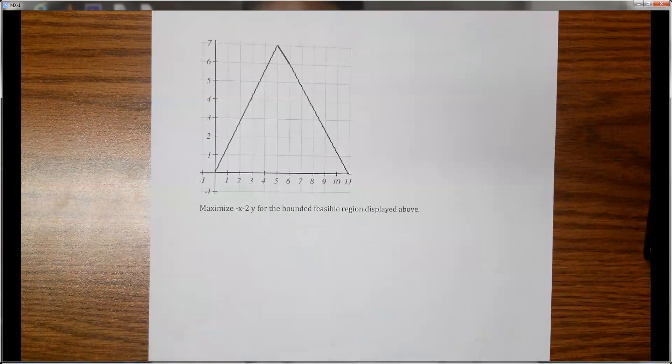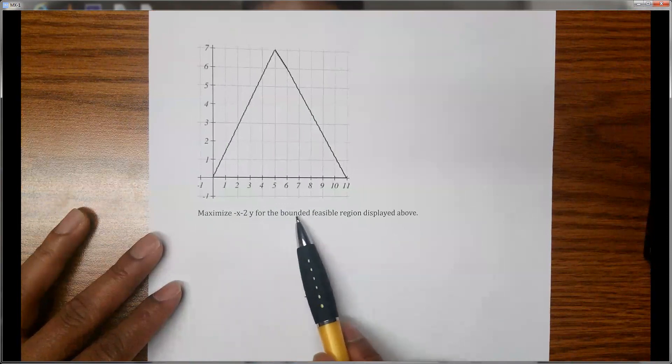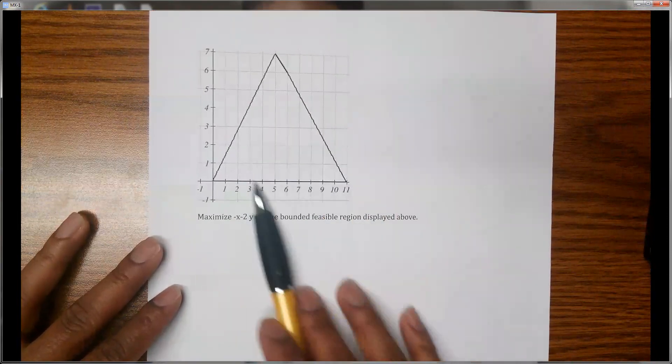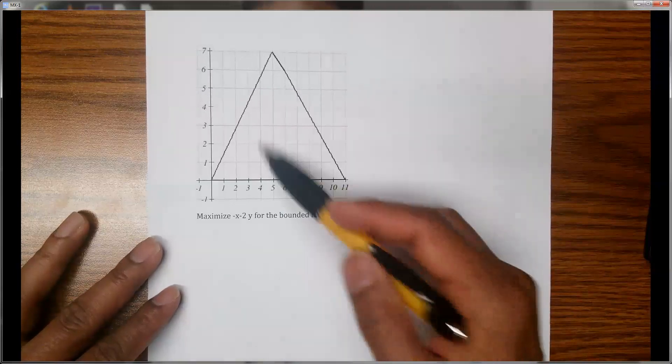For a problem like this, maximize the formula -x - 2y for the bounded feasible region displayed above. This is the bounded feasible region. To maximize or minimize any formula on this feasible region, first of all we need to find the corner points.